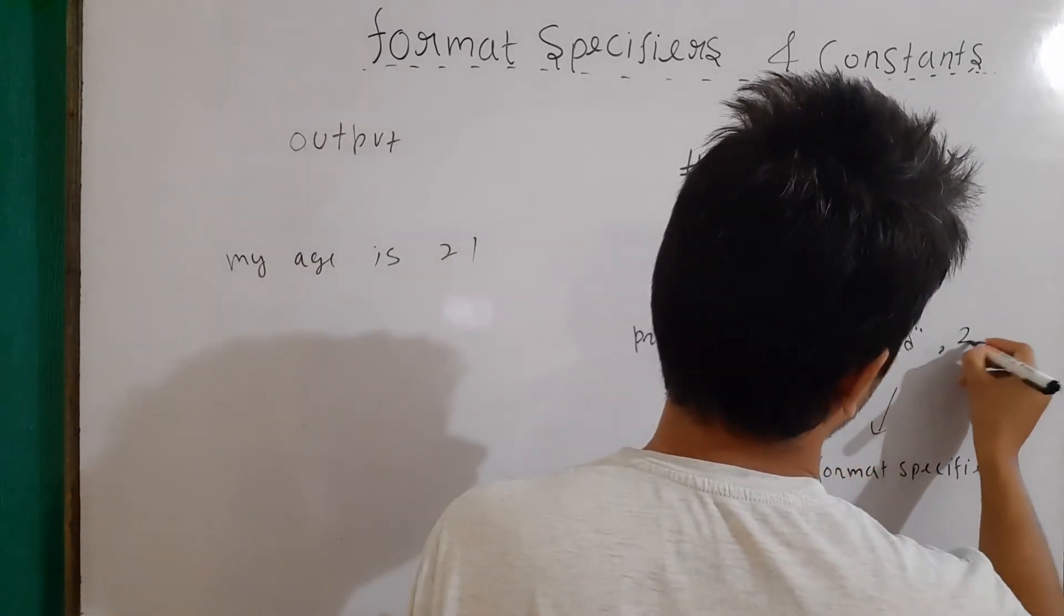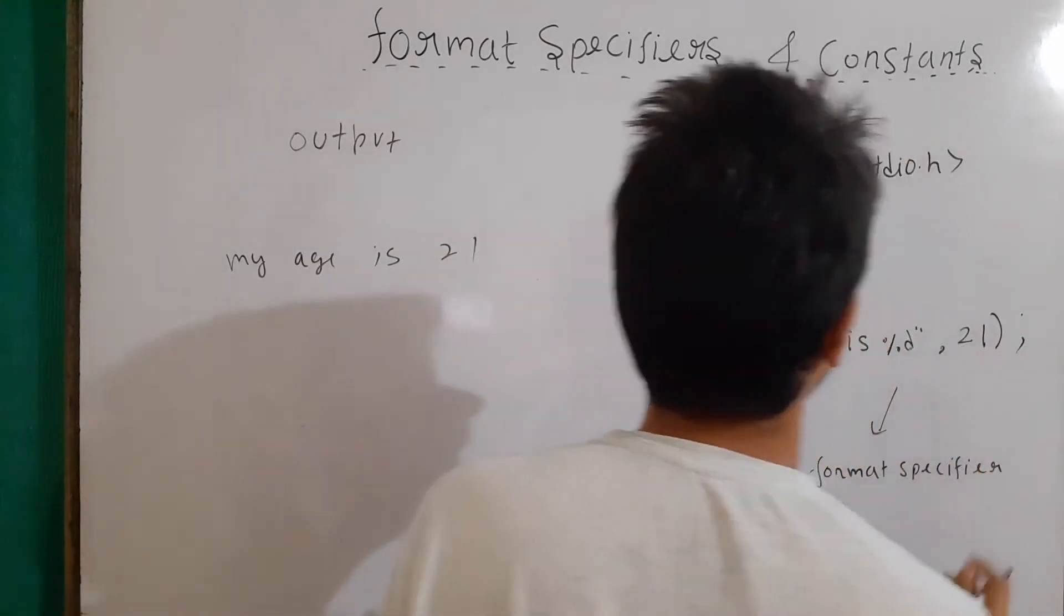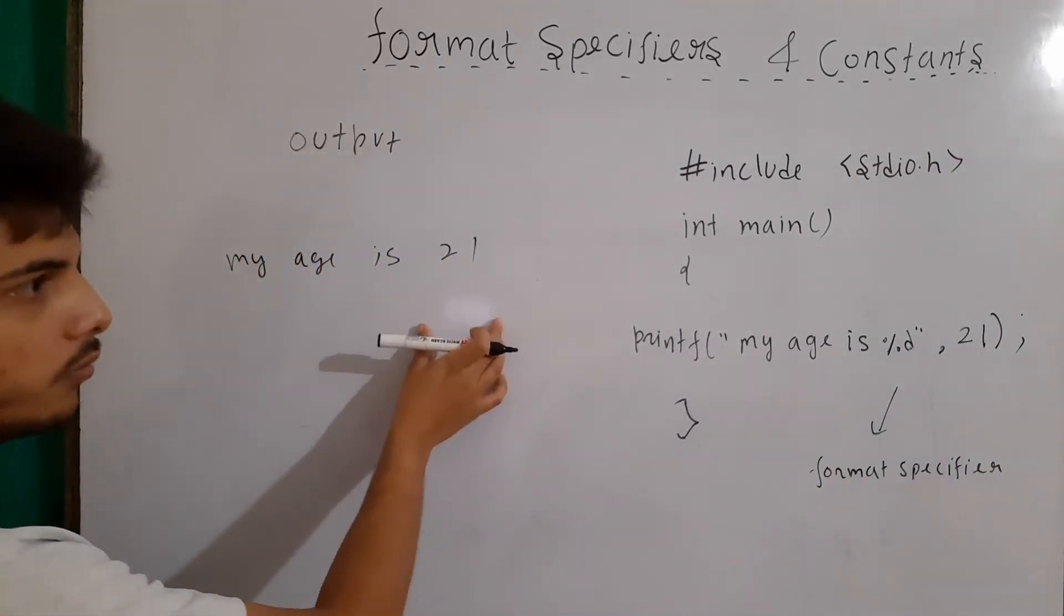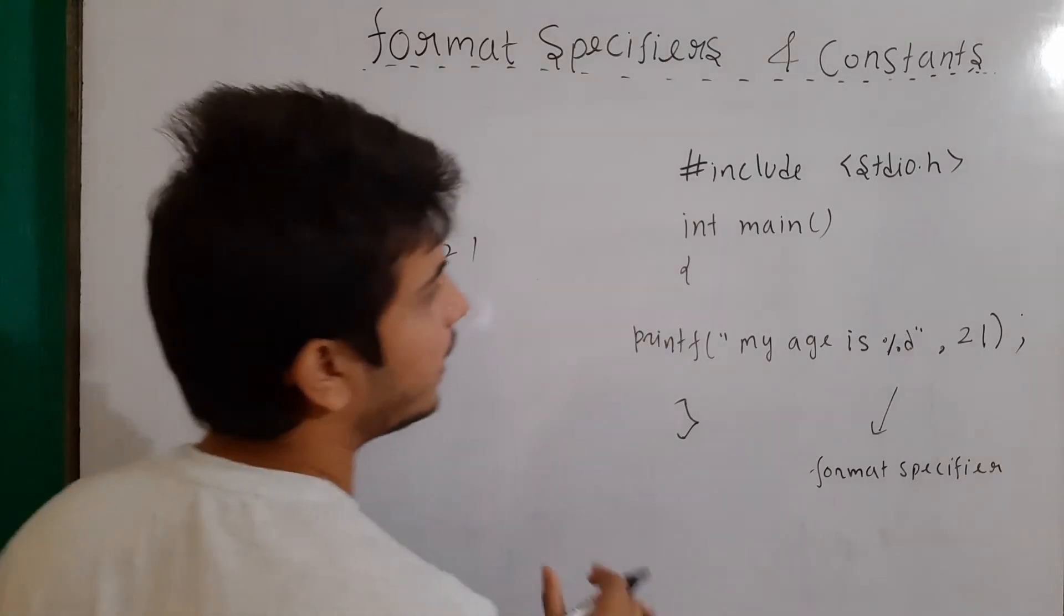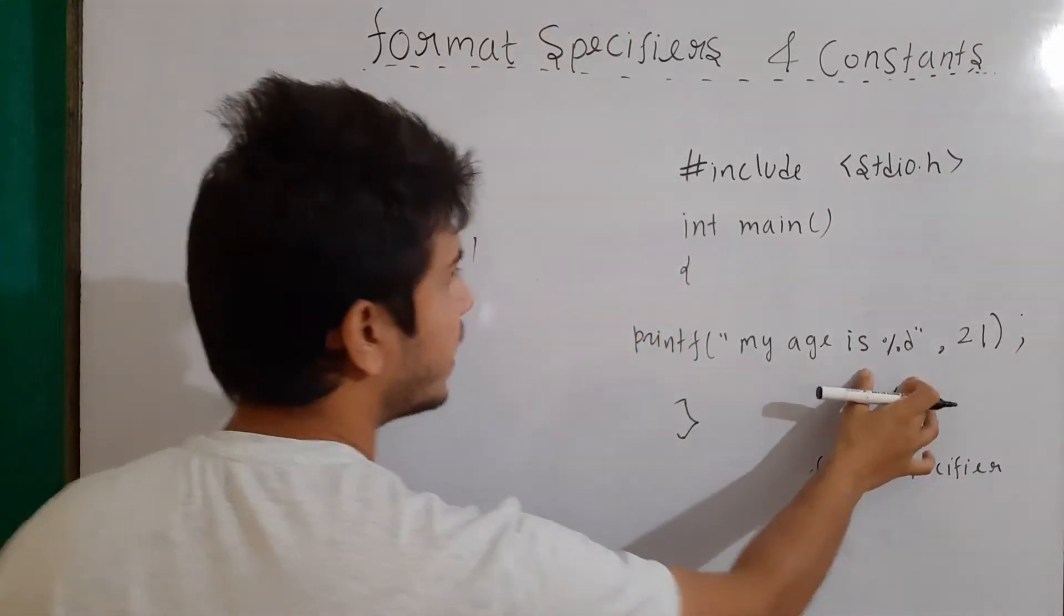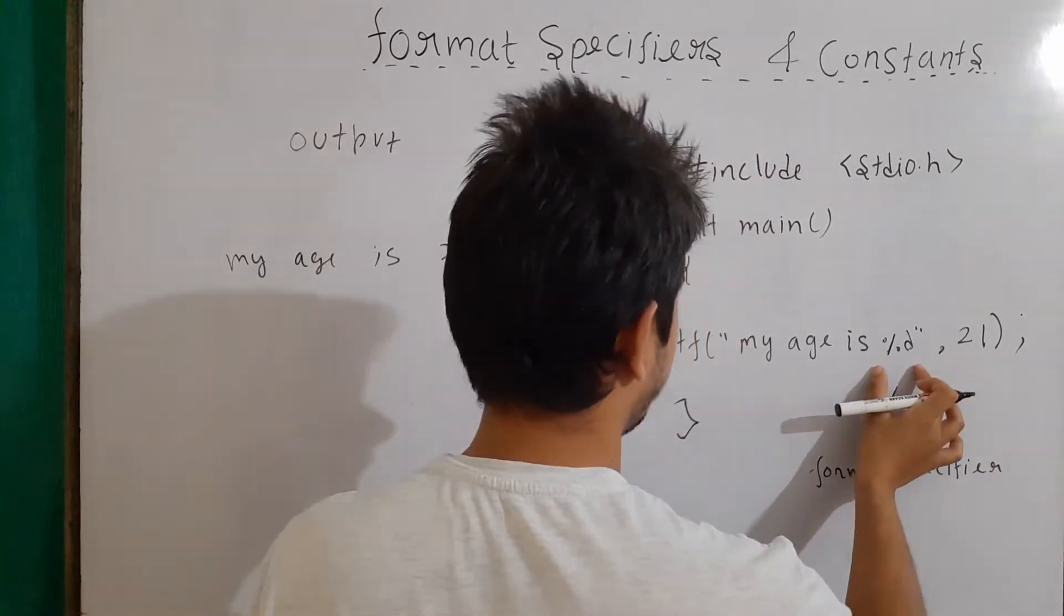Then we will compile the program and run it. The output will still be my age is 21. So basically, our compilers know that the %d format specifier is used here and the first value written here will replace this.